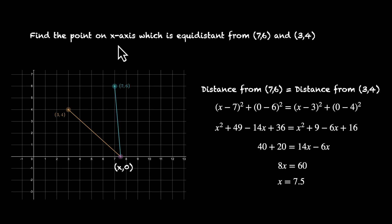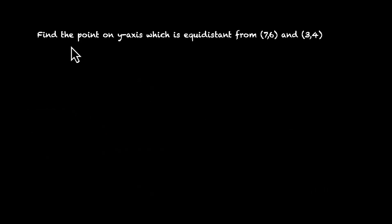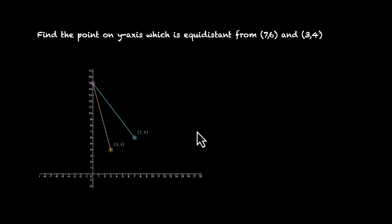This is what the image is also showing. Our point is (7.5, 0). This point lies on the x-axis and is equidistant from both (7, 6) and (3, 4). Now let's solve one more: find the point on the y-axis which is equidistant from these same points (7, 6) and (3, 4). Pause the video and give this a try.